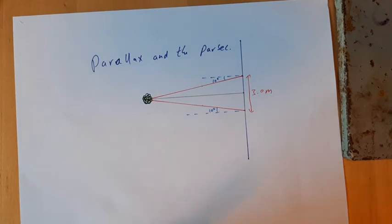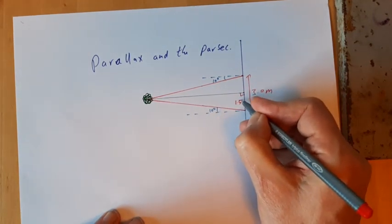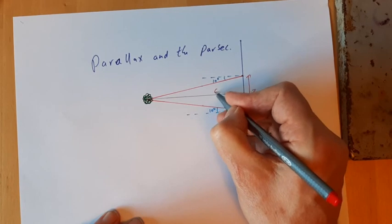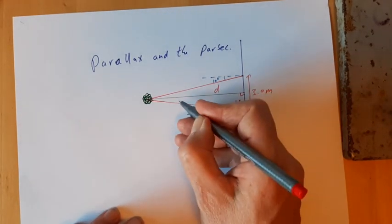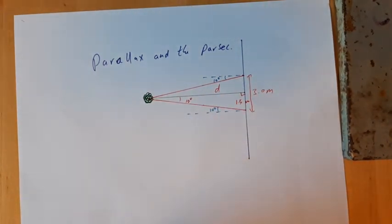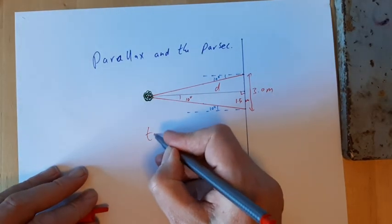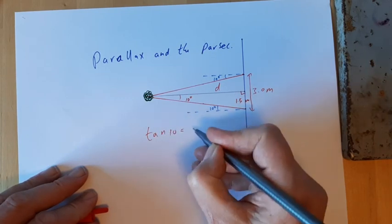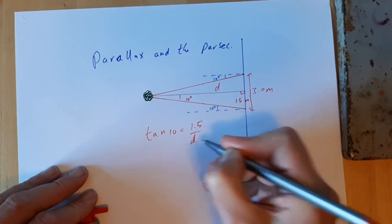We could build a non-right-angle triangle, but we want to know the distance to the tree, so it's easier just to use a right-angle triangle. I know this distance is 1.5 metres, and the distance to the tree is D. The Z-angles rule means that that angle there is 10 degrees. So what we can say is that tan(10°) equals the opposite over the adjacent, which is D.